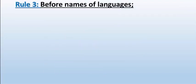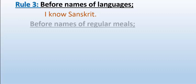Rule number 3: Before names of languages, we don't use article. For example, 'I know Sanskrit.' You cannot say 'I know the Sanskrit' — that is wrong. Same thing: 'I know Marathi,' 'I know Hindi,' 'I know English' — these are all correct.